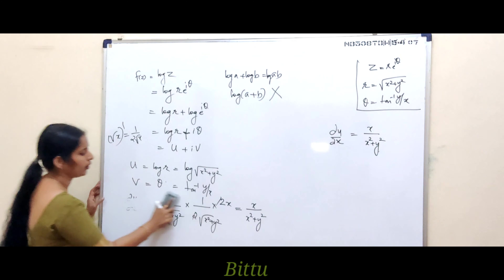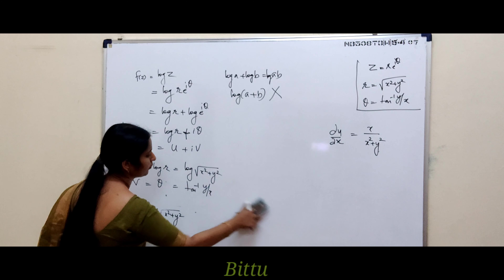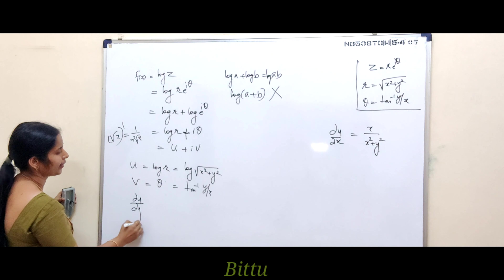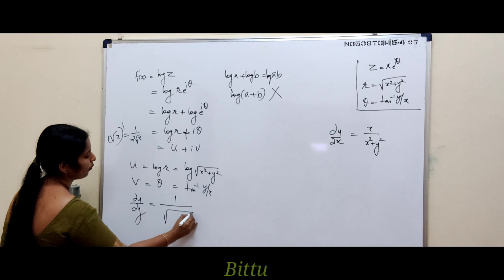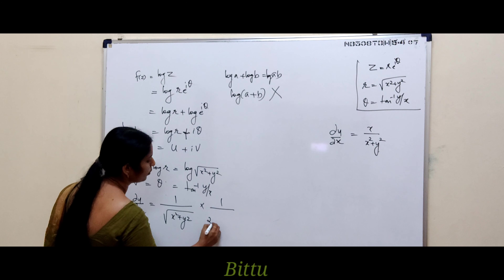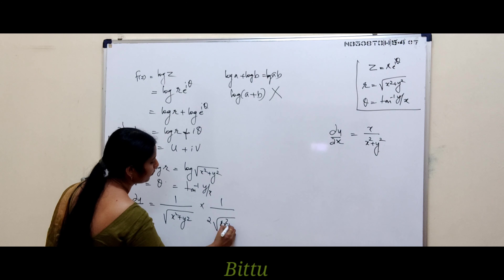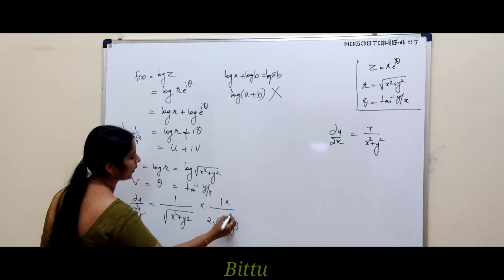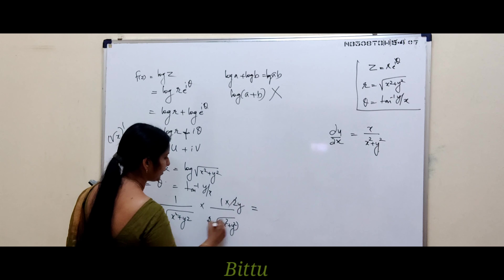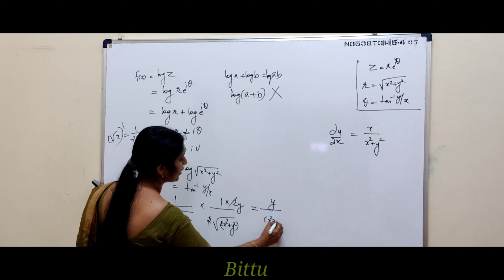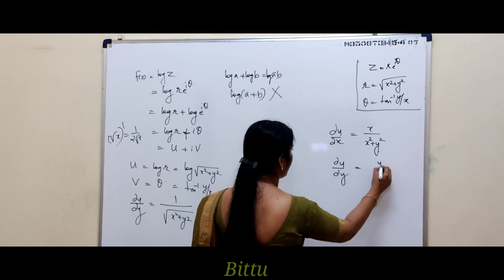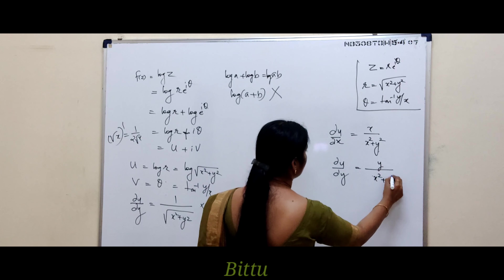Differentiating u with respect to y similarly: ∂u/∂y = [1/√(x² + y²)] · [1/(2√(x² + y²))] · 2y = y/(x² + y²). So ∂u/∂y = y/(x² + y²).